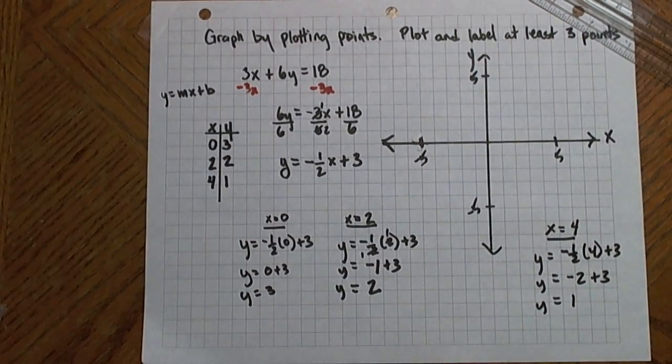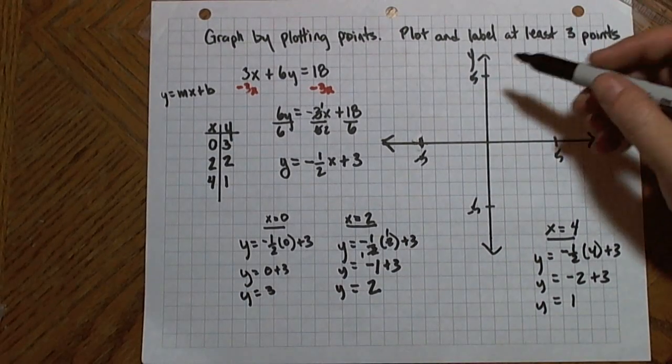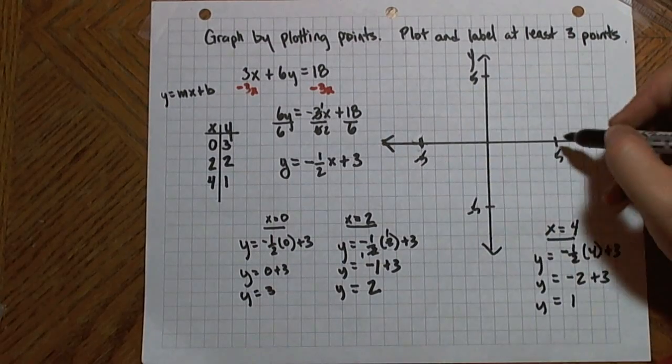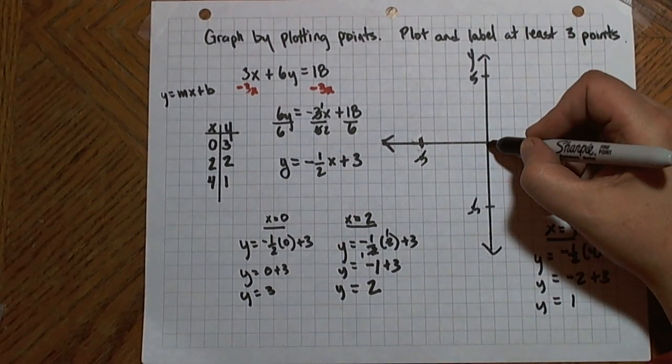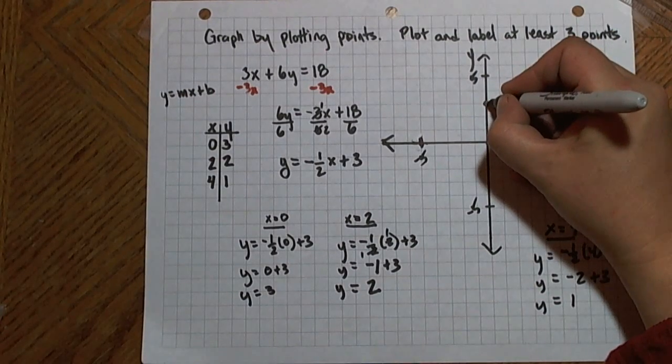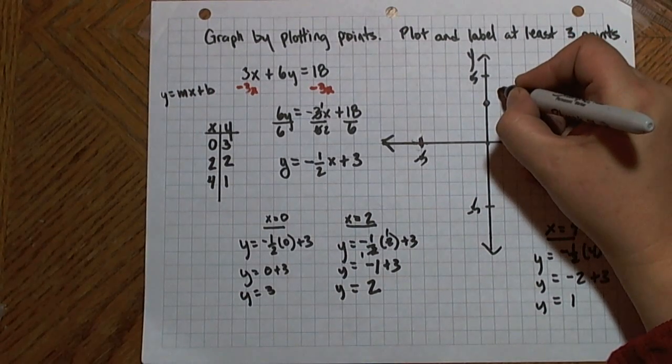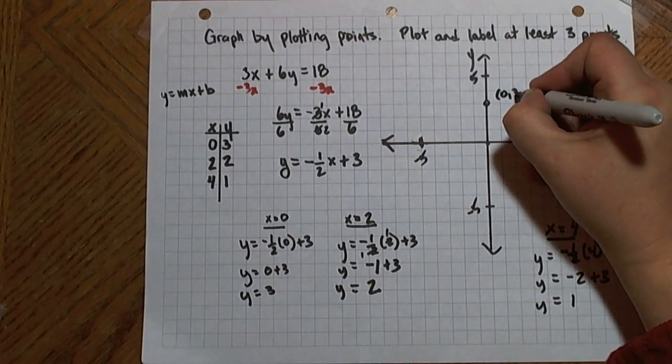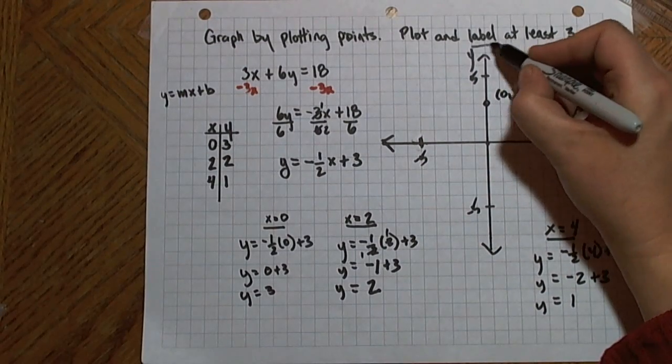So now I have three points. I'm going to go ahead and graph those. I go to my x coordinate is 0, and the y coordinate is 3. And I'm going to put this point down. I get the point 0, 3. So I'm going to label it because it asked me to label the points.